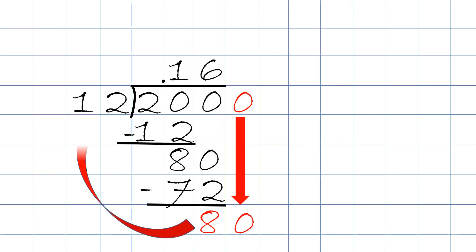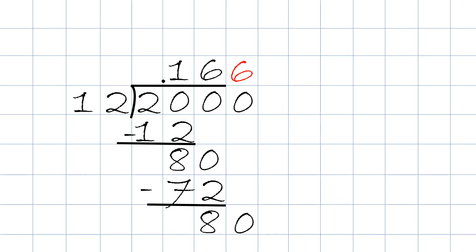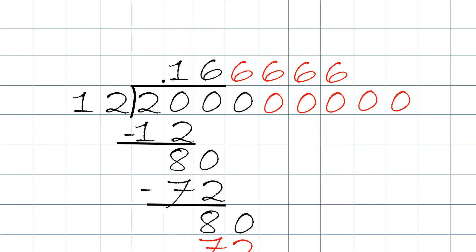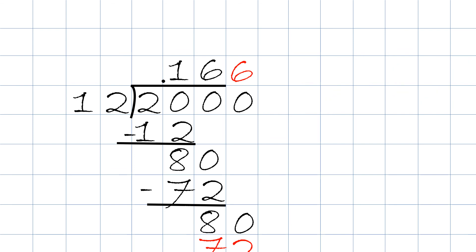80 divided by 12, or how many times does 12 go into 80 without going over, will be 6. We put the 6 right up here, then take 6 times 12, which will be 72. As you can see, we will have to keep on adding zeros forever. The answer will be 0.1666666..., repeating forever. So instead of writing 6s forever, we write 0.166 and draw a line on top, or we write 0.167 and round it off.